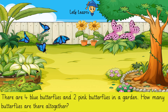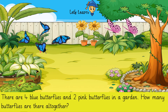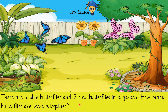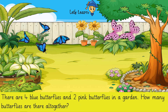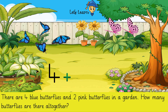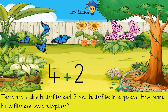There are four blue butterflies. Let's count them: one, two, three, four. Yes, there are four blue butterflies. And there are two pink butterflies: one, two. Four blue butterflies plus two pink butterflies — how many butterflies are there altogether?